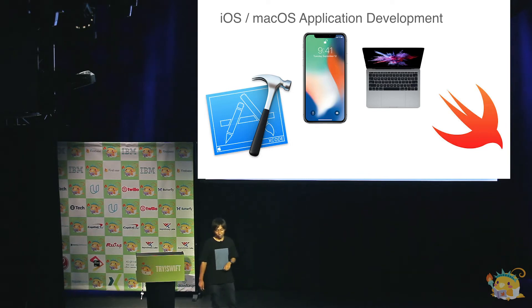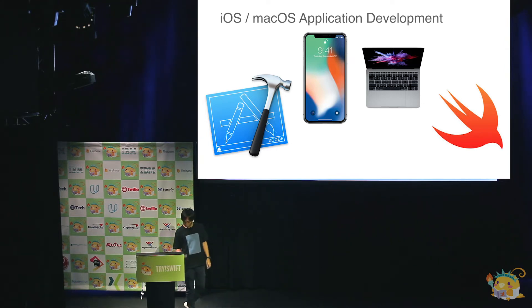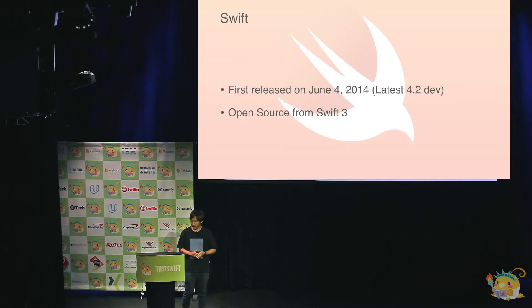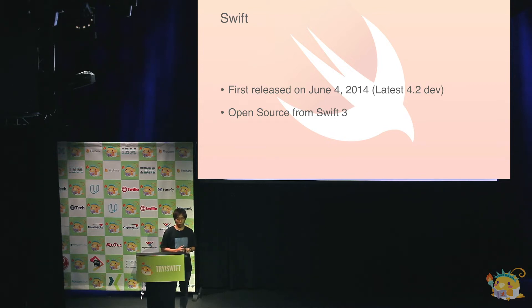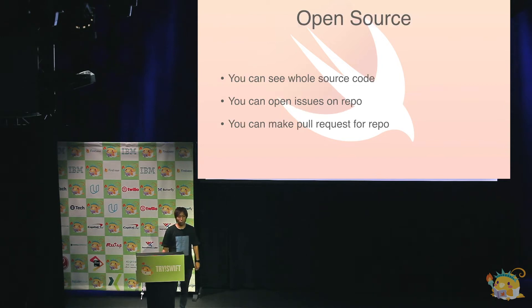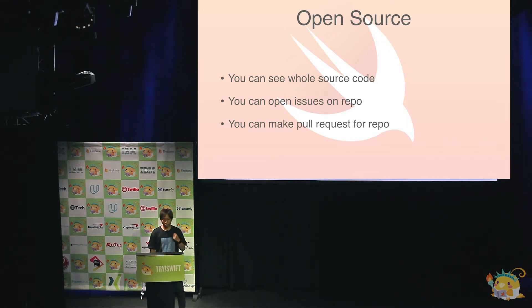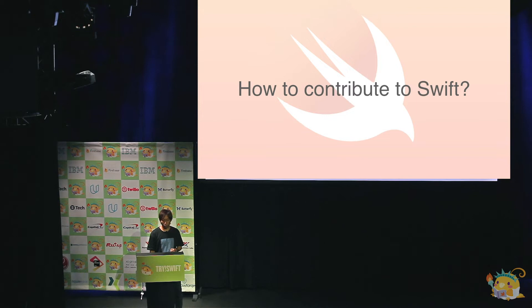I want to talk about Swift being safe today. Swift was released four years ago, and now the newest version is 4.2 in development. It became open source from Swift 3. Open source means we can see all Swift code, including the interface, compiler, and much deeper. When you find some issue, you can open an issue on GitHub or fix it yourself. We can improve Swift ourselves. Today, I'd like to talk about how to contribute to Swift through my own story.